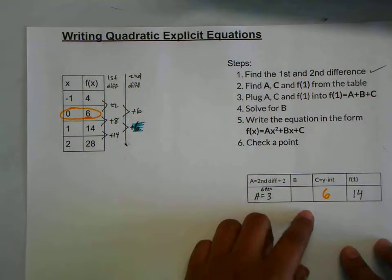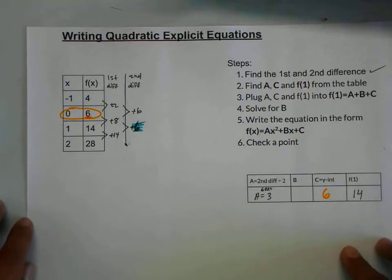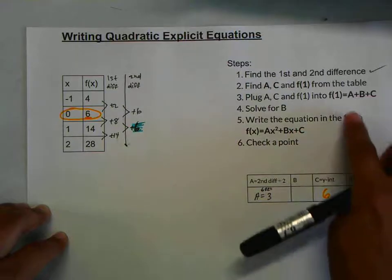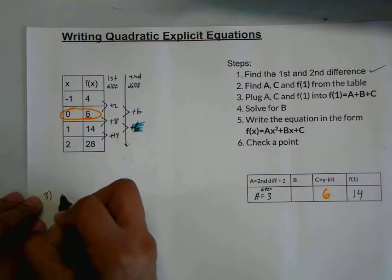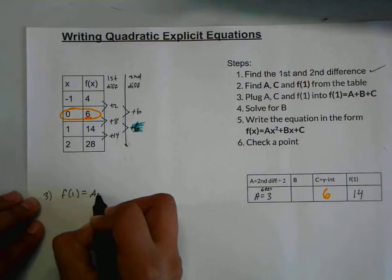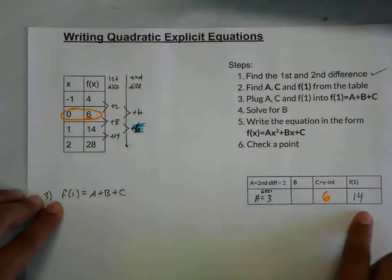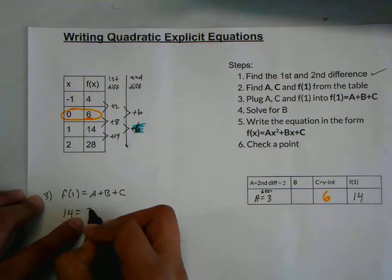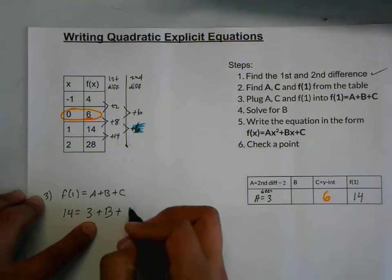You're not going to be able to find b until we use this little equation here. The third step is to plug a, c, and f(1) into what I like to call f(1) is equal to the sum of the ABCs. I'm going to write it out there so we can just plug it in. f(1), 14, should be equal to a, which is 3, plus b, we don't know yet, plus c, 6.